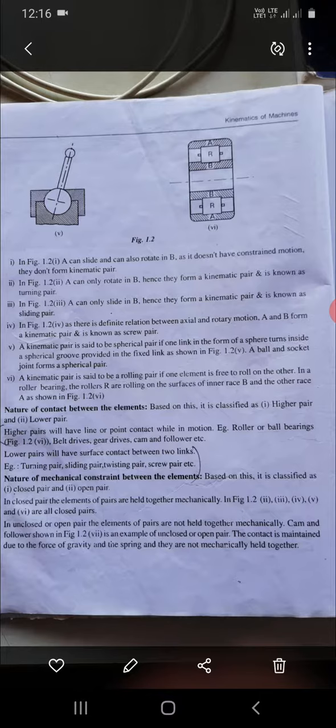The nature of contact between the elements: higher or lower. Higher means it is point or line contact. Lower means it has surface contact. The nature of contact between the elements is based on closed pair and open pair.